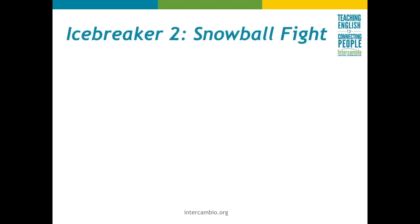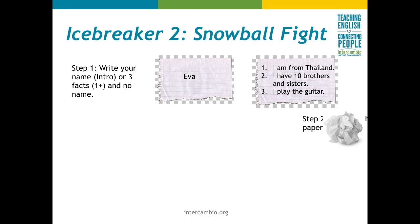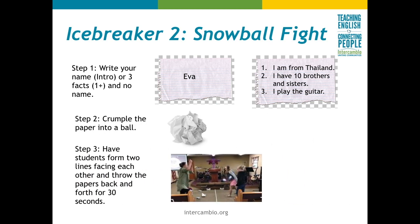Icebreaker activity number two: snowball fight. Take a break toward the middle of class. When everyone comes back, have the students write down their names or three facts on a piece of paper and wad them up into a ball. Split the class in half facing each other and have them do a snowball fight, throwing the balls of paper at each other. After about 30 seconds, have the students pick up the ball closest to them and find the person whose name they have by asking each person 'what's your name,' or by finding the person that corresponds to the three facts on the piece of paper. Once everyone has been found, have the students introduce each other to the class.